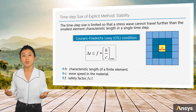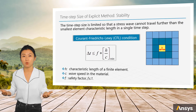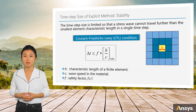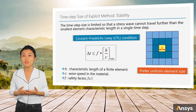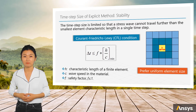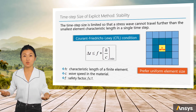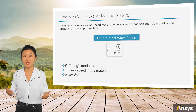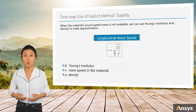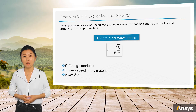Note that it's the minimum characteristic length that controls the time step size in explicit analysis. Therefore, we should try to have element sizes as uniform as possible in one simulation, because we don't want to reduce the time step size just because of one or several extremely small elements. When the material's wave speed is not available, we can use Young's modulus and density to make an approximation.